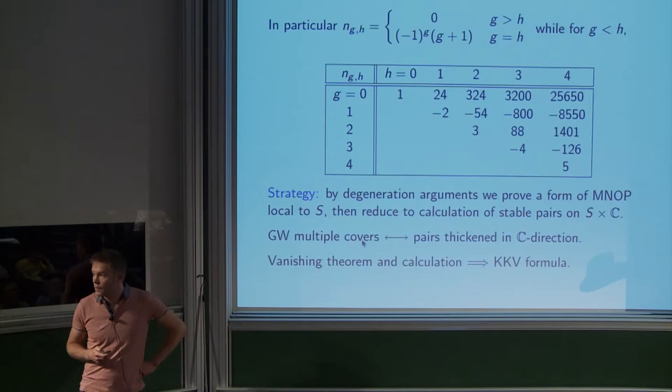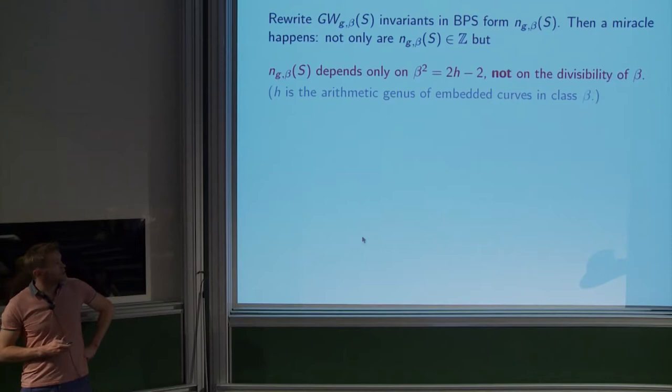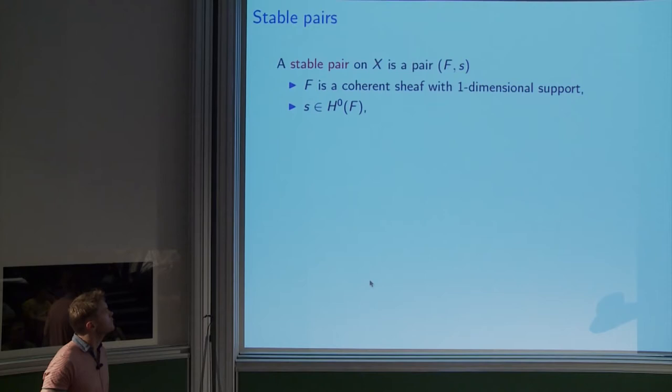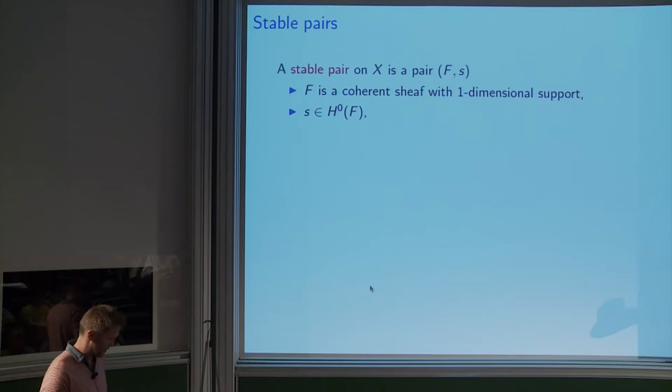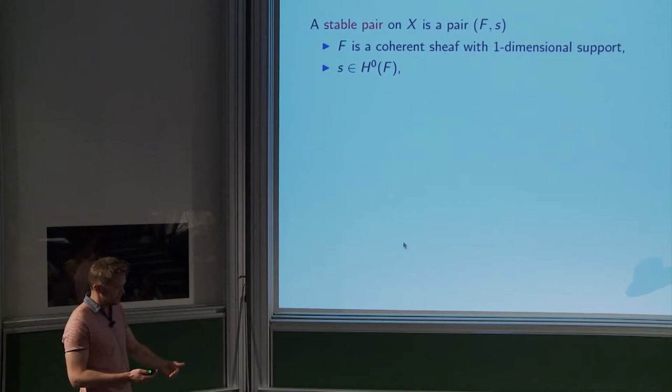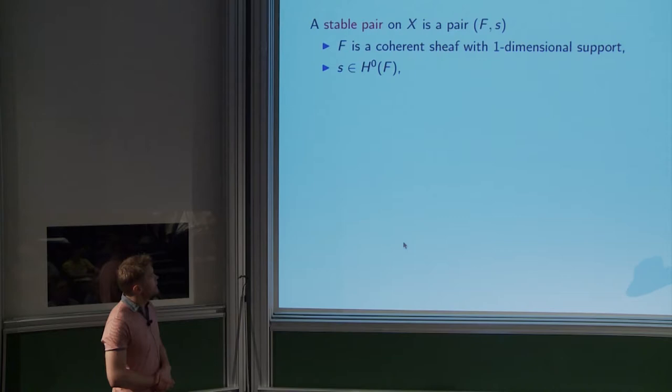This will be done using a vanishing theorem and a localization calculation. The KKV conjecture: the fact that everything depends on the square of beta is part of the conjecture, along with this formula. So I have to tell you what a stable pair is. The slogan is: Gromov-Witten theory counts parameterized curves; stable pairs count unparameterized curves — their images, embedded subschemes more or less.